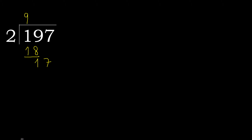17. 2 multiplied by 8 is 16. 16 is not greater. 17 minus 16 is 1. Next.